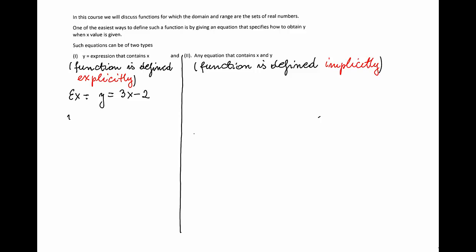For example, if x is a real number, let's say negative 2, then y equals 3 times negative 2 minus 2, which is negative 6 minus 2, which is negative 8. And I have the value of y quickly obtained.